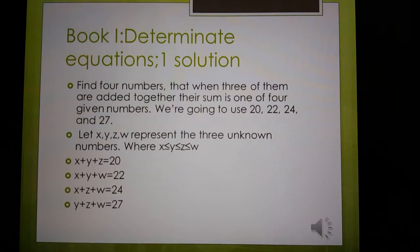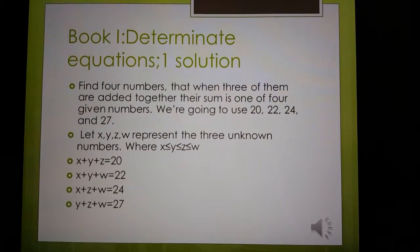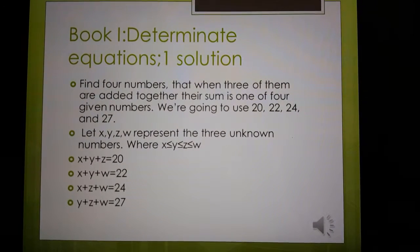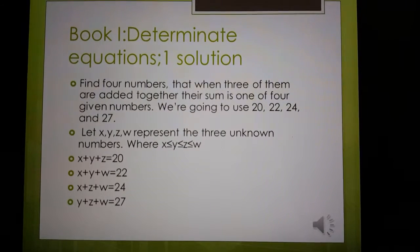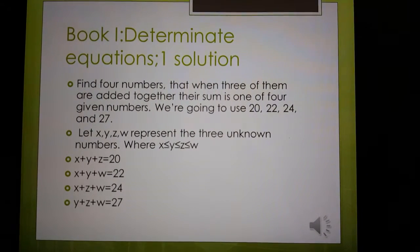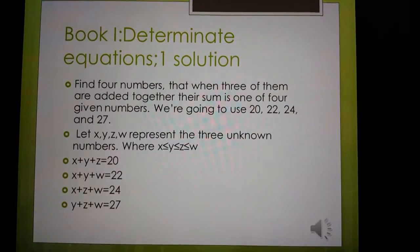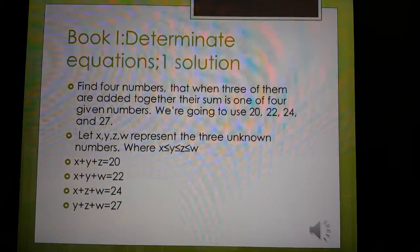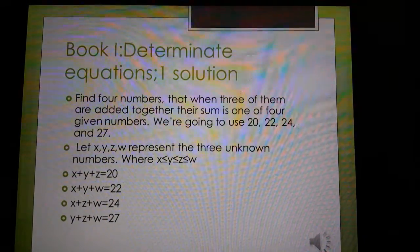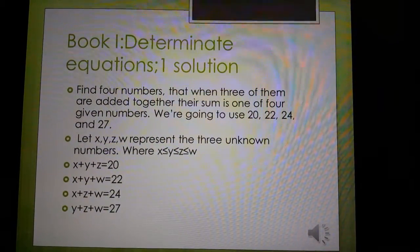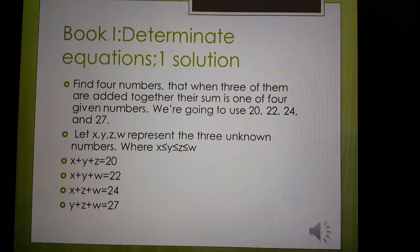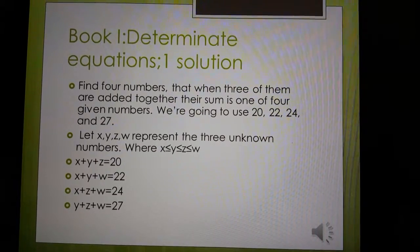The first book that Diophantus had had determinate equations, which are equations that have one solution. One of the problems is find four numbers that when three of them are added together, their sum is one of four given numbers. We're going to use 20, 22, 24, and 27.